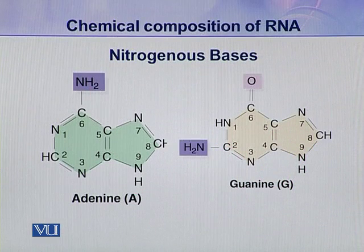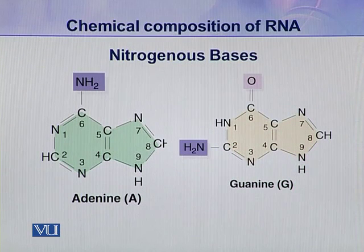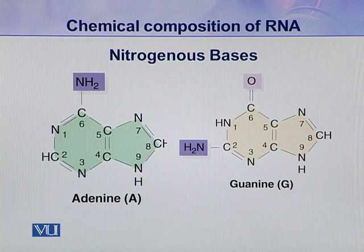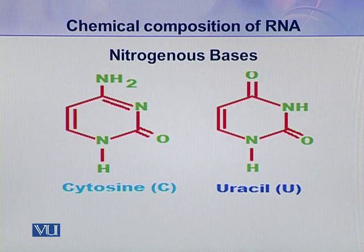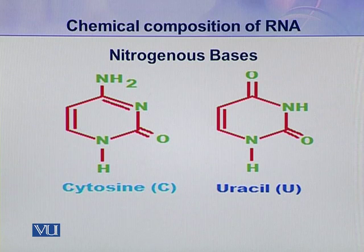The second component of ribonucleic acid is the nitrogenous base. There are mainly two types of nitrogenous bases present in ribonucleic acids: purines and pyrimidines. Two types of purine bases — adenine and guanine — are present in the ribonucleotide. These two bases, adenine and guanine, were also present in the deoxyribonucleotide.